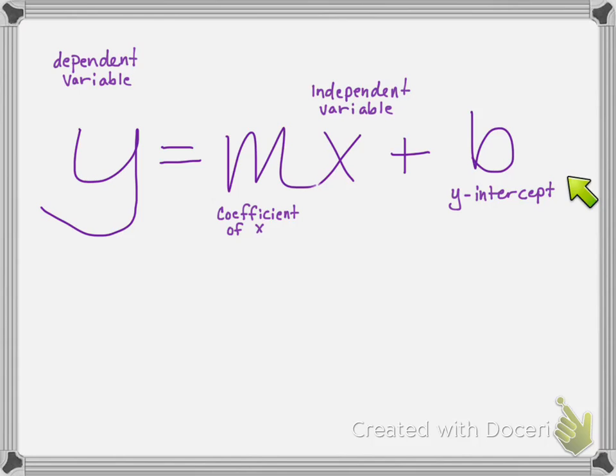And then the b over here on the right is going to be our y-intercept. So let's just go ahead and start talking about the y-intercept. Basically, the y-intercept is the situation where if x is 0, what's our starting point? So if x is 0, what is our y going to be? That's what the y-intercept is going to be.